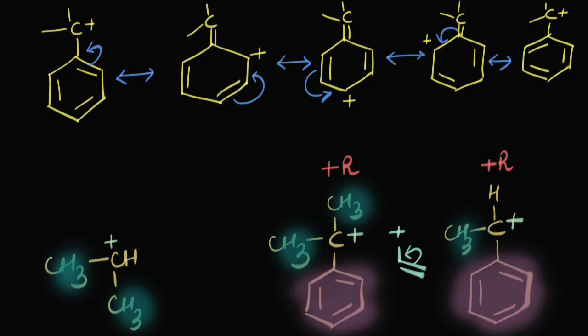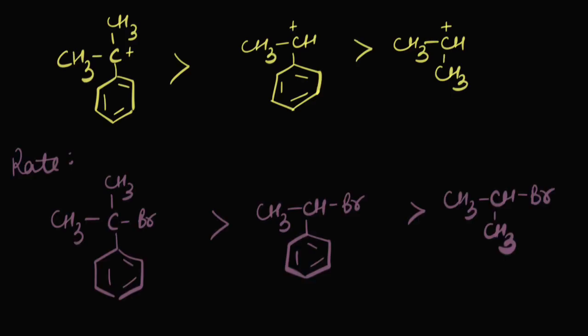So in the second and third cases there's stabilization via resonance, and they also have alpha hydrogens — six alpha hydrogens in the second one and three in the third. Both have resonance, but the second one has more alpha hydrogens, giving it an overall extra stability compared to the third carbocation. The first one has no resonance, just six alpha hydrogens. So the stability order — and hence the rate order — follows: more stable the carbocation, the faster it will form and the faster the rate of reaction via SN1 for that substrate.